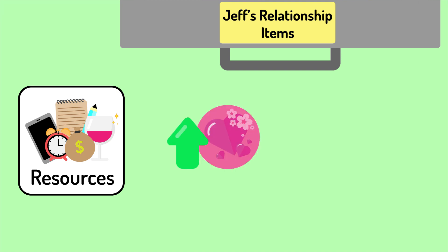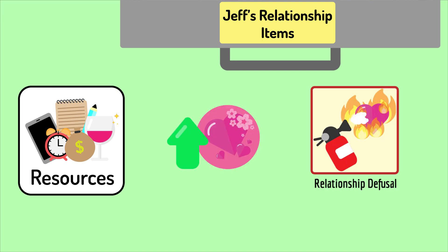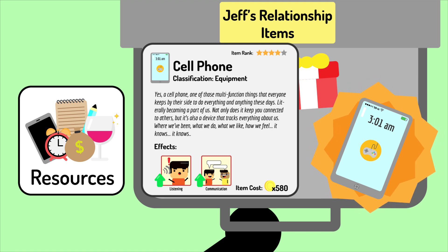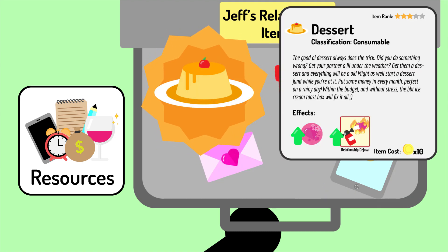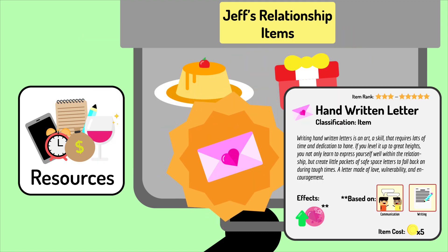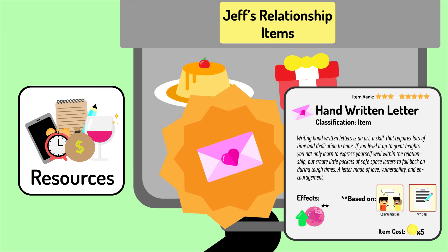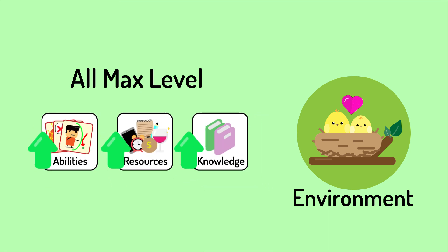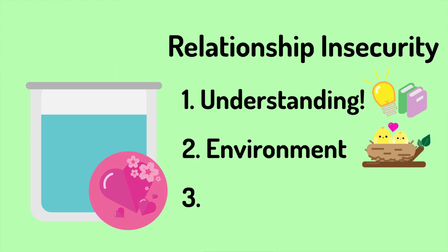As for resources, these are the many items you use to enhance the relationship environment and defuse conflicts — such as phones to keep you connected and increase conversations, desserts to help ease triggers and lower the impact of bad actions, presents to improve likability and demonstrate awareness, and handwritten letters to really express your love and deepen the relationship. And with the right skills, resources, and knowledge, we can now arm ourselves to tackle step three: removing the trigger.